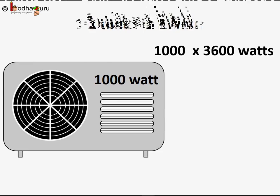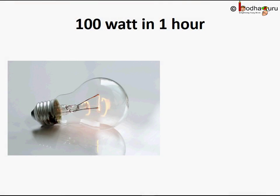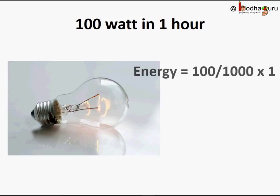Let us take some examples. How much energy does a 100-watt bulb consume in one hour? A 100-watt bulb will consume 100 divided by 1000 — to convert it to kilowatts — multiplied by one hour, which equals 0.1 kilowatt-hours. Since 100 is in watts, we divide by 1000 to make it kilowatts, and we need to find energy for one hour, so it becomes 100 by 1000 into one, which equals 0.1 kilowatt-hours.